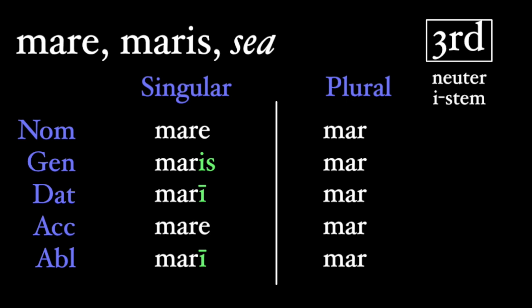In the plural, we add an i before all endings that don't currently have them. So the nominative plural ends in -ia, the genitive in -ium, the dative in -ibus, the accusative in -ia, and the ablative also in -ibus.